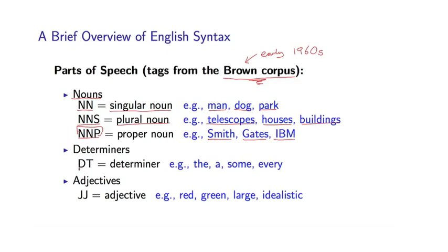Moving on, a second very important part of speech is DT, which stands for a determiner. So determiners are words like the, or a, or some, or every. Determiners usually come before nouns. And so I can have strings like the man, or a man, or some man, where I see a determiner before a noun.